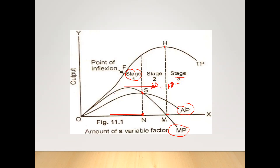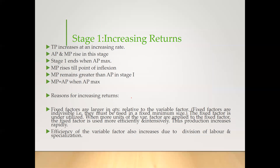Initially, this is the MP curve. MP was first rising, then it declined. AP is also rising, but after that it is declining. MP is rising faster than AP — you can see here this is the AP curve and this is the MP curve. This is the characteristic of stage 1.